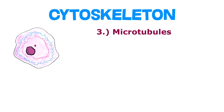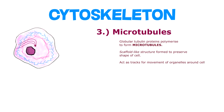We also have microtubules, which are large globular tubulin proteins that polymerize to form large tubes. These create a scaffold-like structure which determines the shape of the cell, and they also act as tracks for the movement of organelles around the cell.